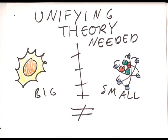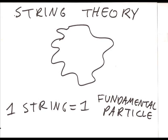We can't have a universe with two different sets of rules for how things move. What is needed is a theory that can explain the motion of big and small things, a unifying theory. One such theory is string theory.